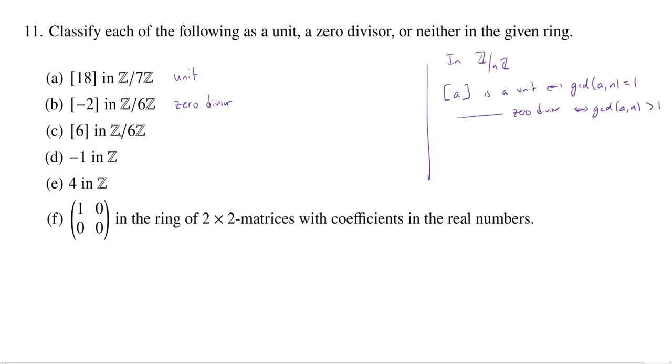And then here, 6 and 6, definitely not GCD equaling 1. So you might say, OK, so this is going to be a zero divisor. But you might also say, well, isn't this zero? Can that be a zero divisor? Yeah, you betcha it can.